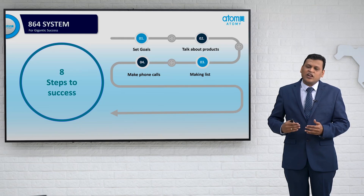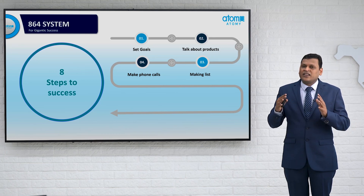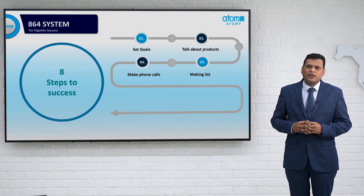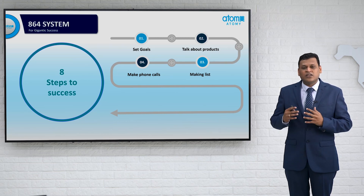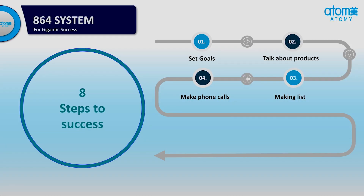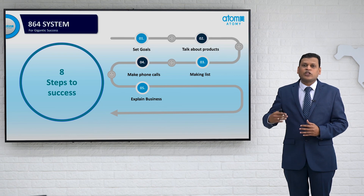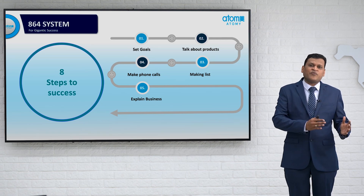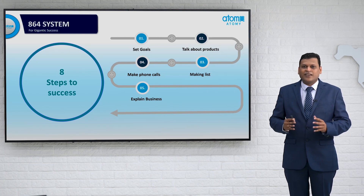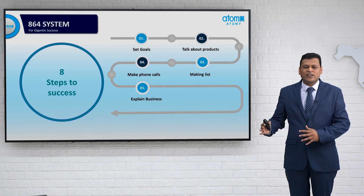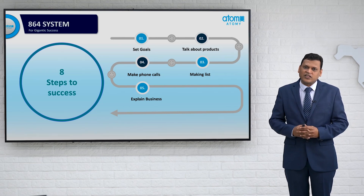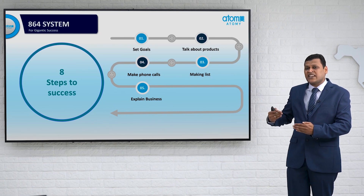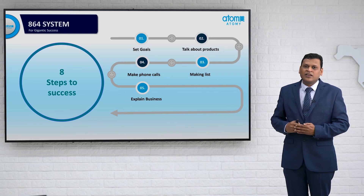The next step is to make phone calls. After making the list, call them one by one and discuss the company products with them, because the products are the heart and soul of our business. Talk to your prospective consumers about the products first. After making the phone call you can explain about the business, because if you tell them about the business first and then talk about the product, they will say it is a direct selling company and will not join.